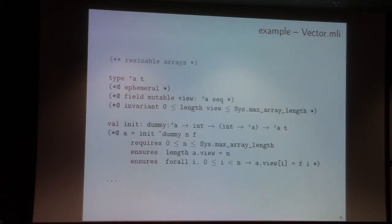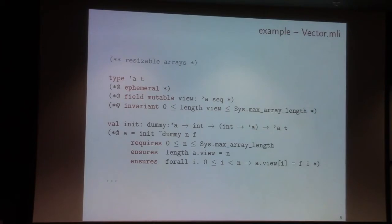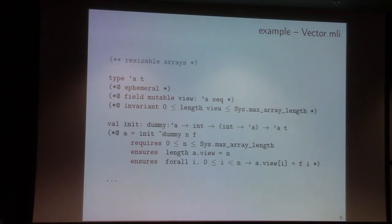Here is an example of such use of the specification language. It's the vector.mli file, which is the interface for resizable arrays. Here we can say things like: this is an ephemeral type. We can say that we are going to axiomatize it — we are going to model it using a logical sequence — just to model the elements inside the structure. And we can equip it with an invariant, which is a property that all inhabitants of this type must respect.